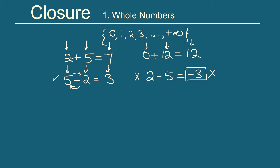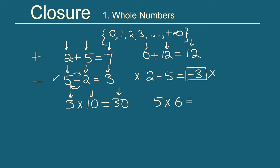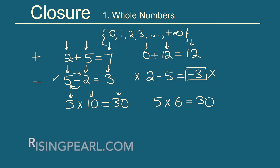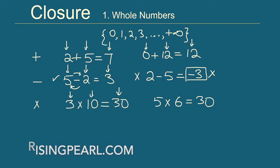Now let's do multiplication. Take two whole numbers, say 3 multiplied by 10 — we get 30, a whole number. Another example: 5 times 6 gives 30 again. When we multiply two whole numbers we always get a whole number. So we say that whole numbers are closed under multiplication.